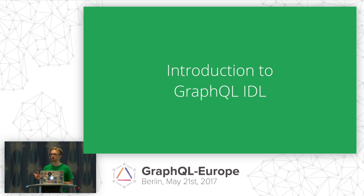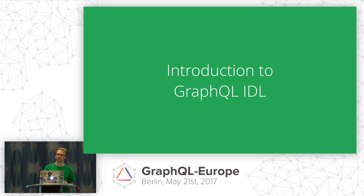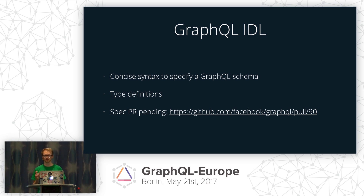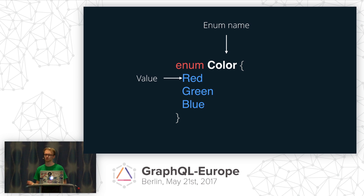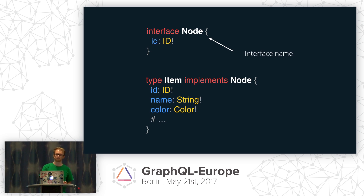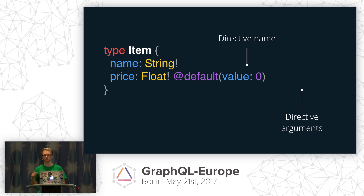For those of you who are not yet familiar with GraphQL IDL, here's a quick introduction. GraphQL IDL is a very concise syntax to specify a GraphQL schema. You're basically writing small type definitions which represent the data model of your application. Even though the GraphQL IDL syntax is not yet officially part of the GraphQL spec, a lot of tools are already adopting it. You can define a type called Item, specify its fields and their corresponding types. The syntax also supports enums and even interfaces, and you can add directives to types and fields based on your own DSL — which is a really powerful tool.